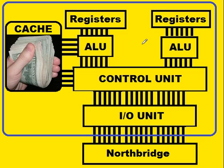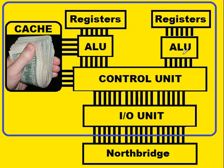Here is the CPU unit. Its outside edges are designated by the purple line here. It contains two registers which act as memory. Those two registers are connected to the ALU, the Arithmetic Logic Unit, which manages calculations within this entire CPU area.